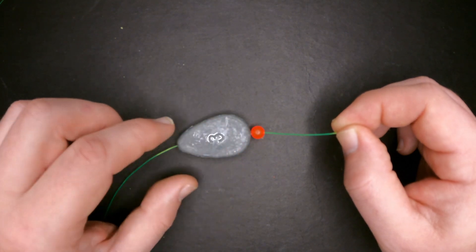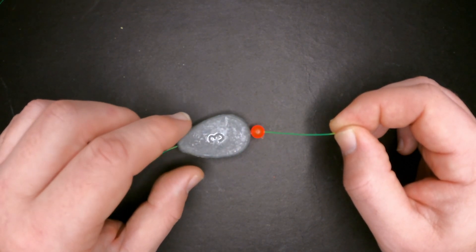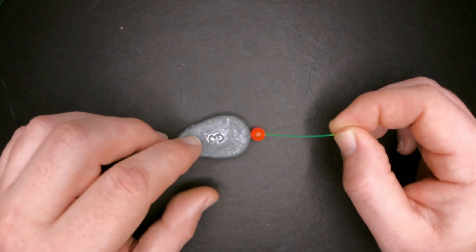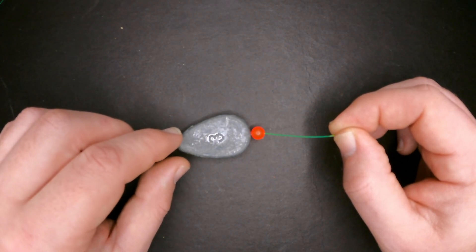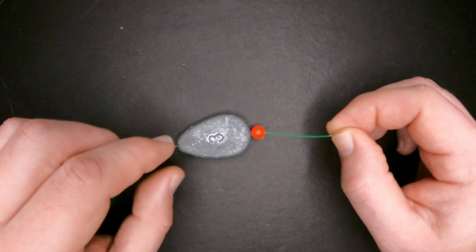Now it's not required but I like to use the bead because it acts as a buffer between the weight and the knot on the barrel swivel. Sometimes if you don't have that bead the weight can just be banging on that knot and over time it can weaken. So I use that little bead right there as a buffer to just kind of protect that knot.